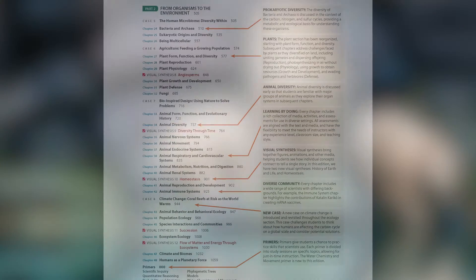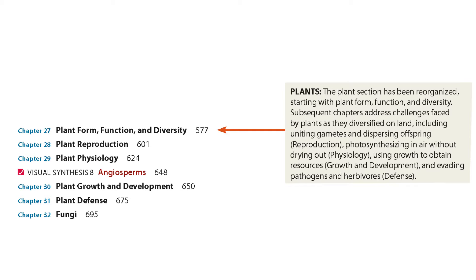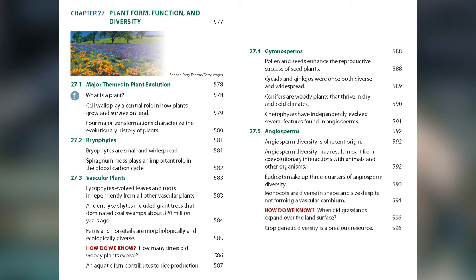Let me use plants as an illustration. The plant section begins in Chapter 27 with an introductory chapter called Plant Form, Function, and Diversity. In that chapter, we look at what a plant is, what the major features of plants are, and what the major groups of plants are. This provides a great introduction and gives students a vocabulary for subsequent chapters. It also conveniently provides a one-stop shop — so if you don't have time to cover the detailed plant chapters, this one chapter can serve your course.